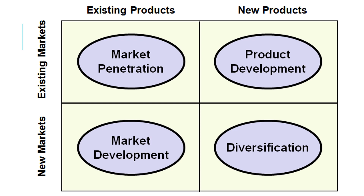Here is Ansoff's Matrix. It's a matrix because it's a grid — a two-by-two grid. At the top we have categories for existing products and new products, and on the side we have two strategies: continuing in existing markets or entering new markets.